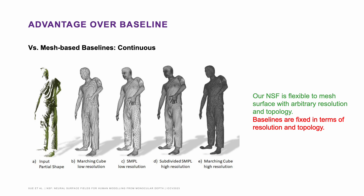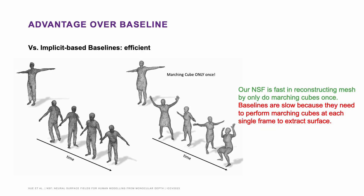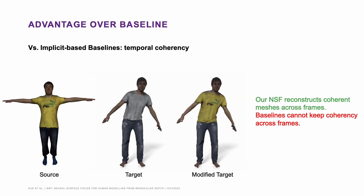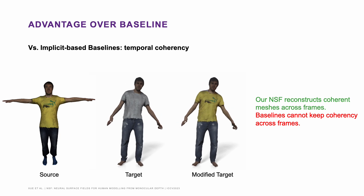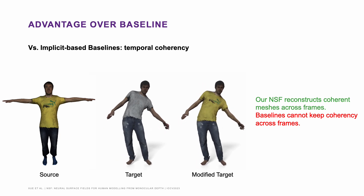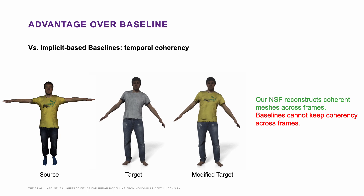In addition to accuracy, our method has features that are not possible in baselines. Compared to mesh-based baselines, our NSF is continuous and flexible to reconstruct meshes with arbitrary resolution and topology. Compared to implicit-based baselines, we only extract the surface once, eliminating the need for marching cubes or Poisson reconstruction for each single frame, which is very practical in application. Besides, NSF reconstructs temporally consistent meshes, enabling texture transfer and mesh editing — for example, we can transfer the upper body texture from the source to the target easily.